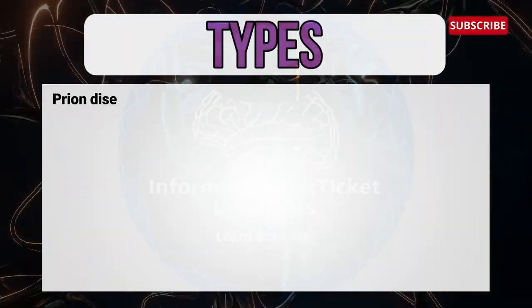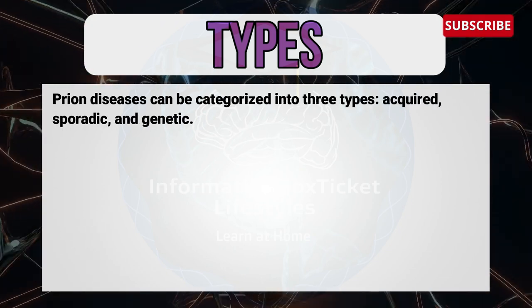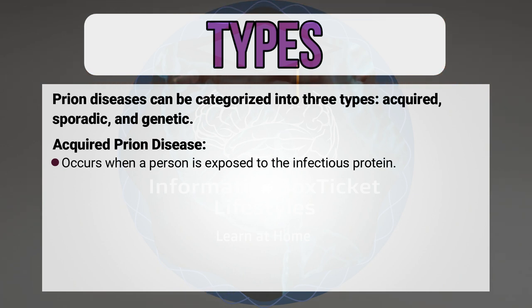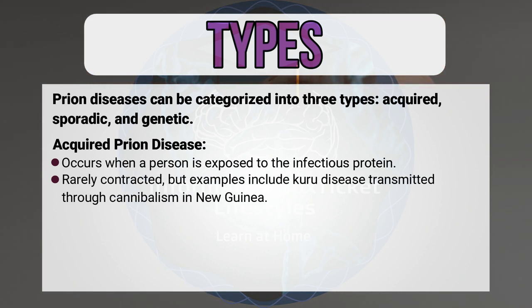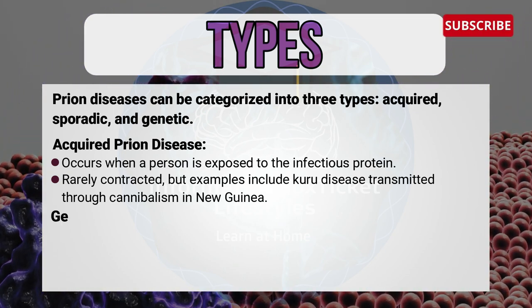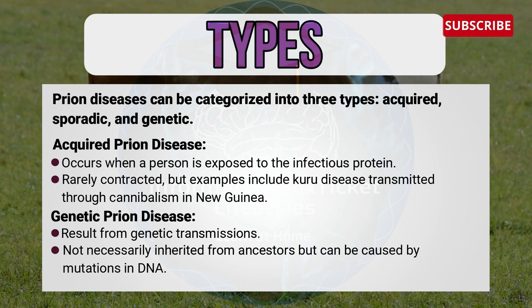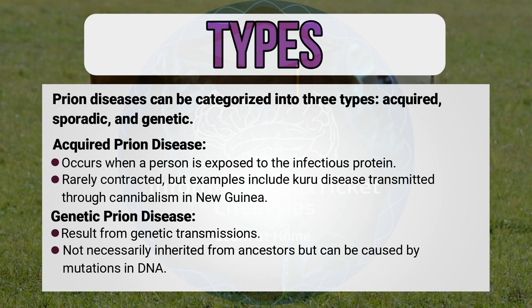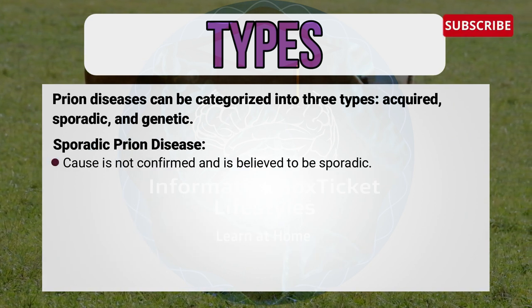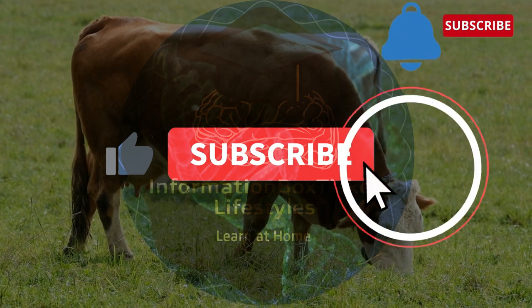Types of prion diseases: Prion diseases can be characterized into three types — acquired, sporadic, and genetic. Acquired prion disease occurs when a person is exposed to an infectious protein; it is rarely contracted, but examples include Kuru disease, transmitted through cannibalism in New Guinea. Genetic prion diseases result from genetic mutations — not necessarily inherited from ancestors but can be caused by mutations in DNA. Sporadic prion disease has no confirmed cause but is believed to arise spontaneously and is the most common form of prion disease to date.